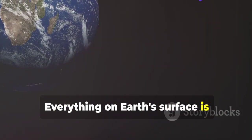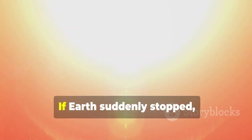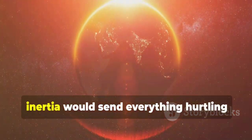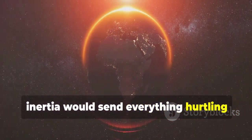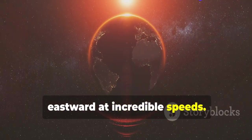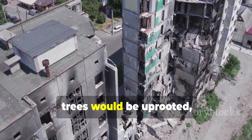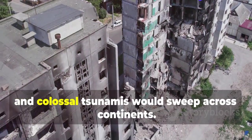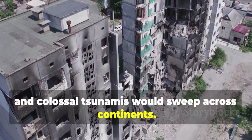Everything on Earth's surface is constantly moving eastward due to the planet's rotation. If Earth suddenly stopped, inertia would send everything hurtling eastward at incredible speeds. Buildings would crumble, trees would be uprooted, and colossal tsunamis would sweep across continents.